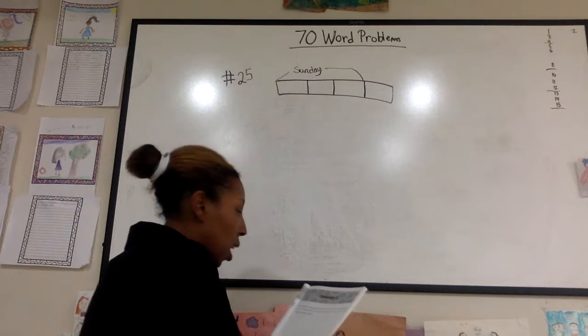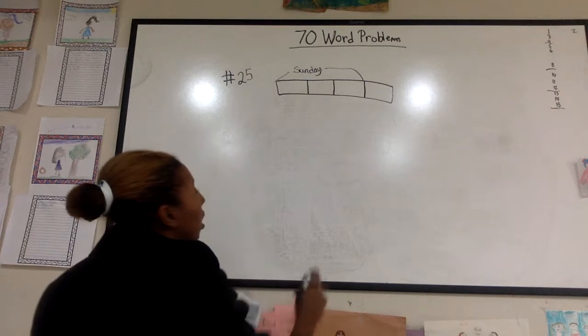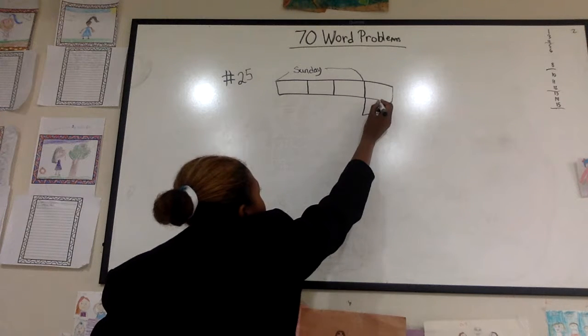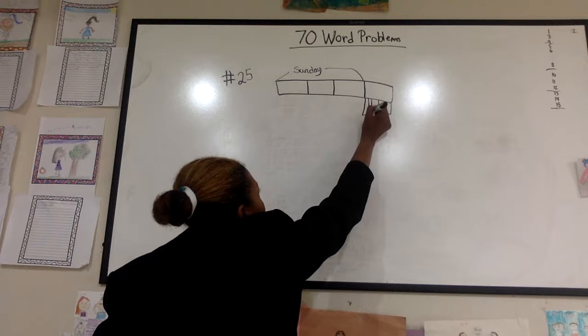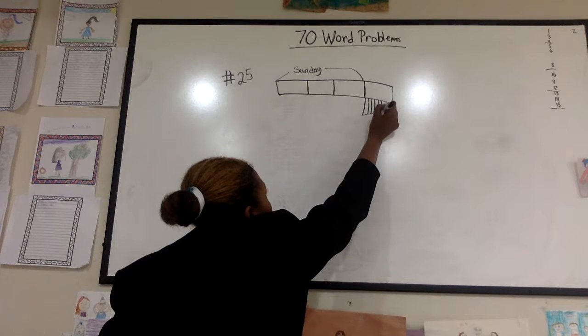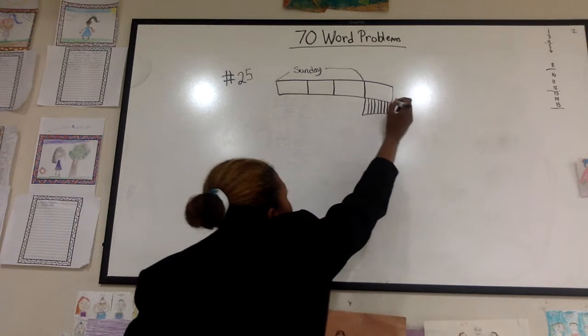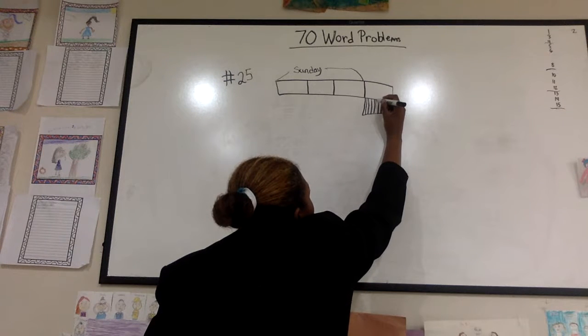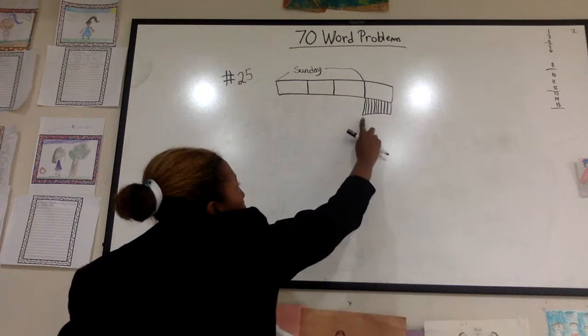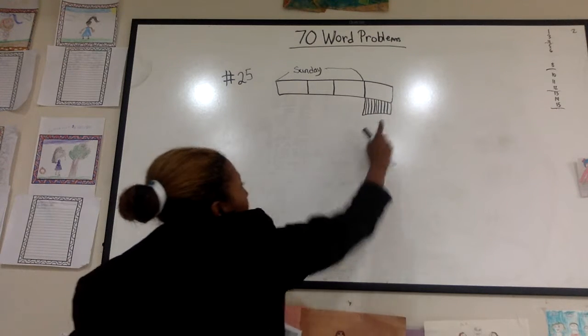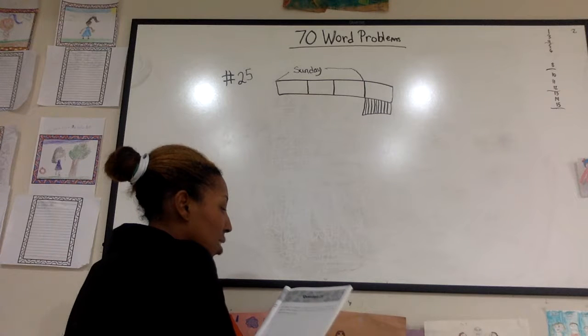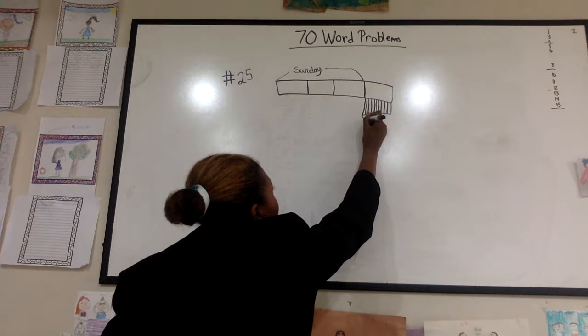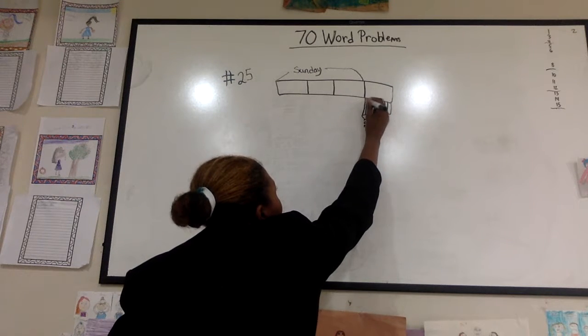Then it says two-tenths of the remainder on Monday. So I have my remainder here, and it said two-tenths. So I'm going to split this into ten. Remember, they should all be equal, but since I'm free-handing it's kind of hard. One, two, three, four, five, six, seven, eight, nine, ten. So it says he read two-tenths on Monday. So one, two, was Monday. These two were Monday.